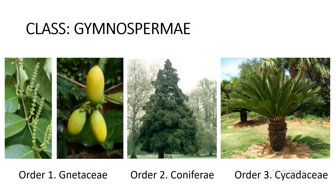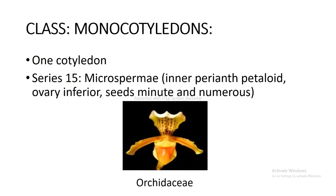Class Gymnospermae: includes three orders. The first order is Gnetaceae, second order is Coniferae, and the third is Cycadaceae as shown in the figure. Class Monocotyledons: Series 15 Microspermi — inner perianth petaloid, ovary inferior, seeds minute and numerous — includes Orchidaceae as shown in the figure.